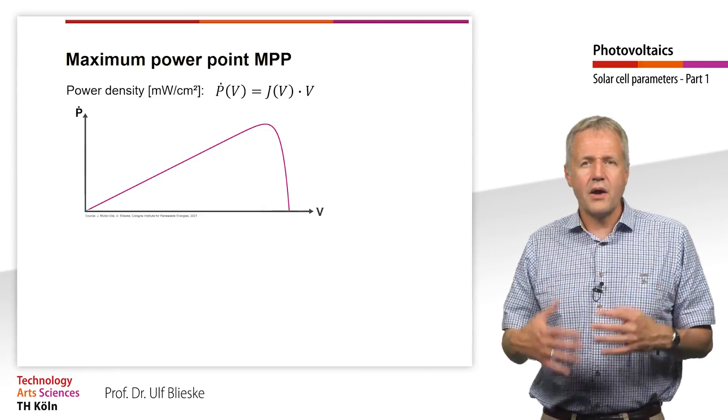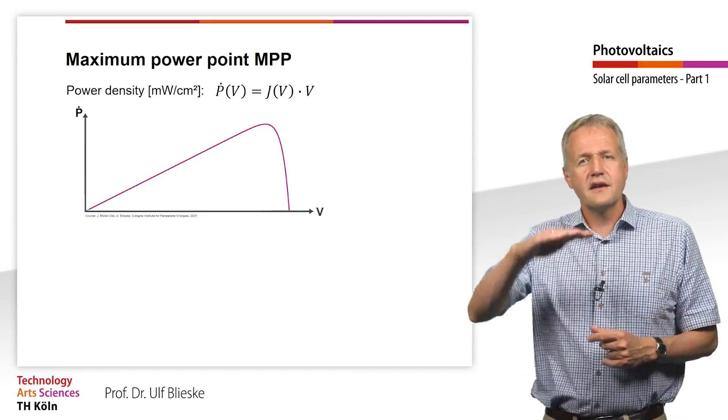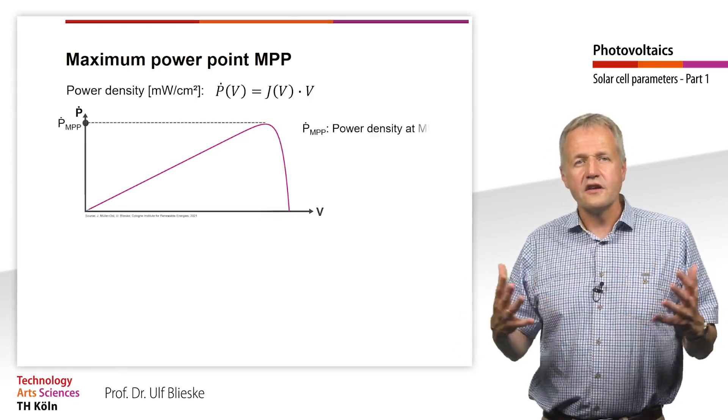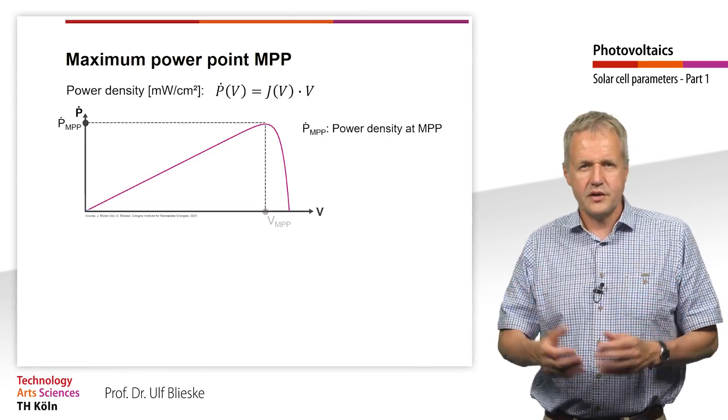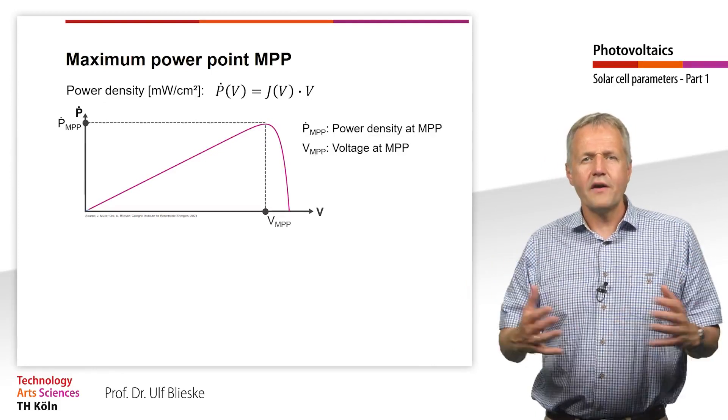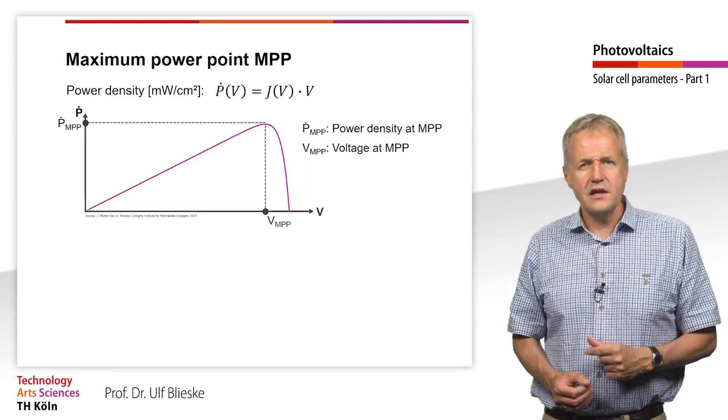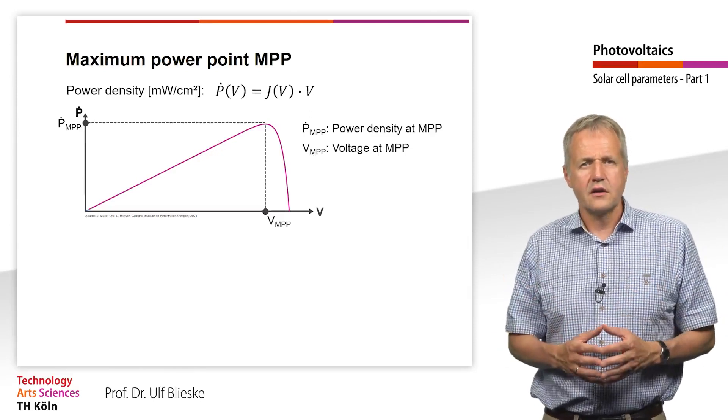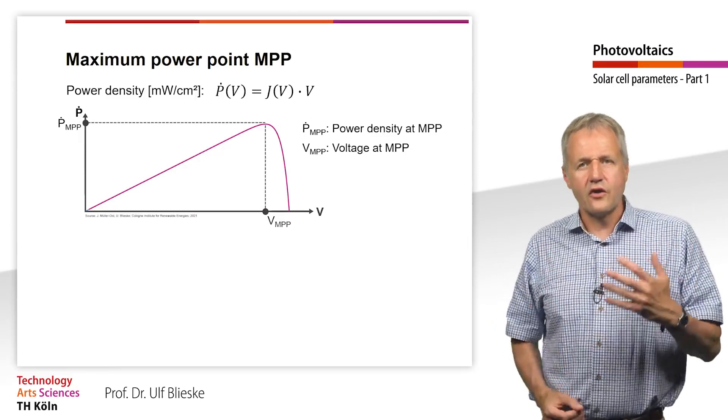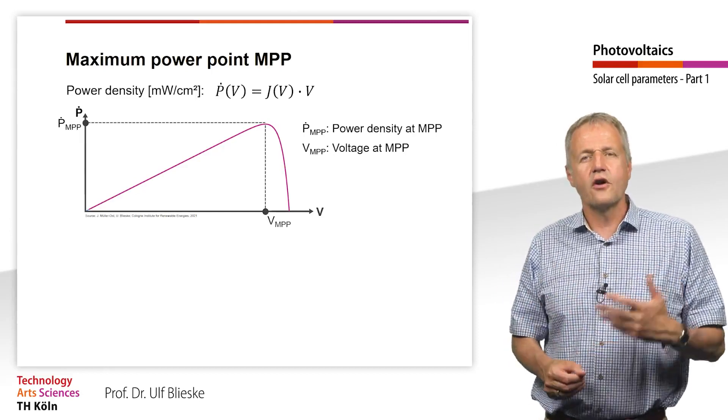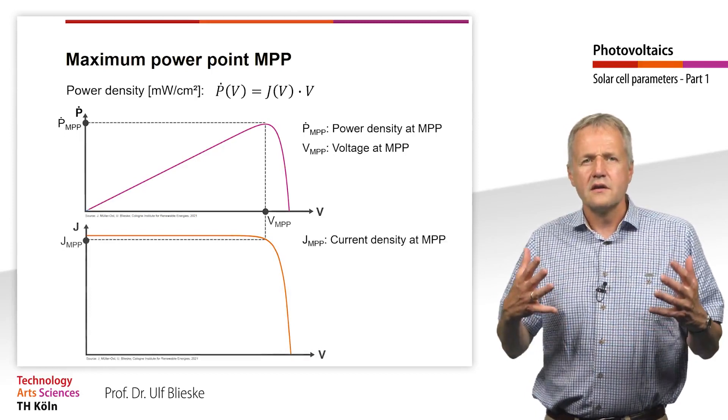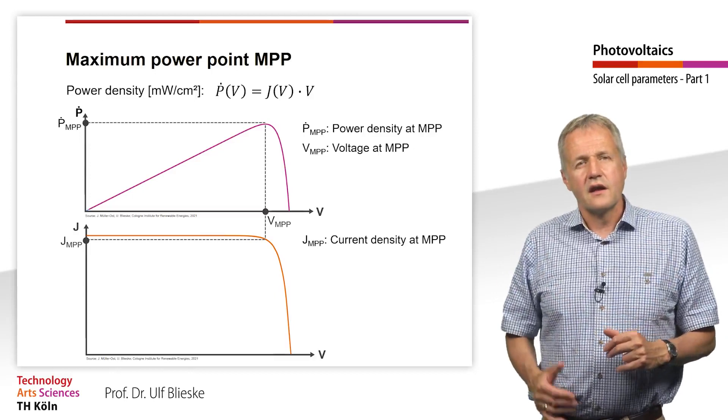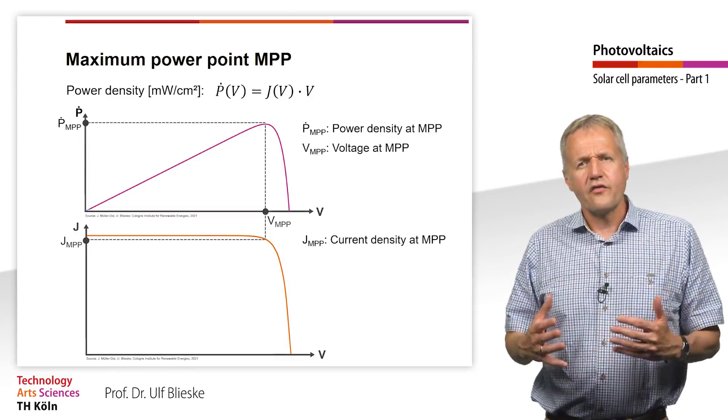We see that the power density varies with voltage and has a maximum. This point in the PV or IV curve is called the maximum power point MPP. The power density at MPP is called PMPP and the voltage at which it is reached is called VMPP. Accordingly, the current density at which the MPP is reached is called JMPP. The MPP typically lies in the area where the U characteristic curve has its knee.